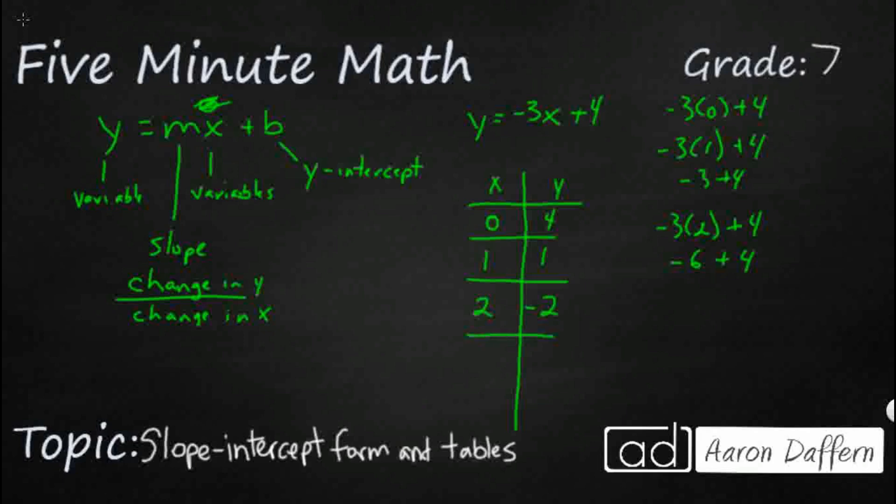Then obviously we can just make a big jump if we really need to. So let's go negative 3 times 10 plus 4. So that's negative 30 plus 4. So that's going to be negative 26. So this is just a basic table that we could use to plot out some points for the slope-intercept form.